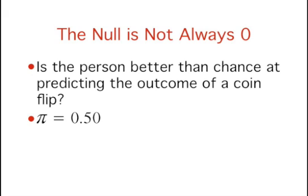Similarly, in the James Bond example, the null hypothesis is that his probability of telling the difference between shaken and stirred is 0.50.